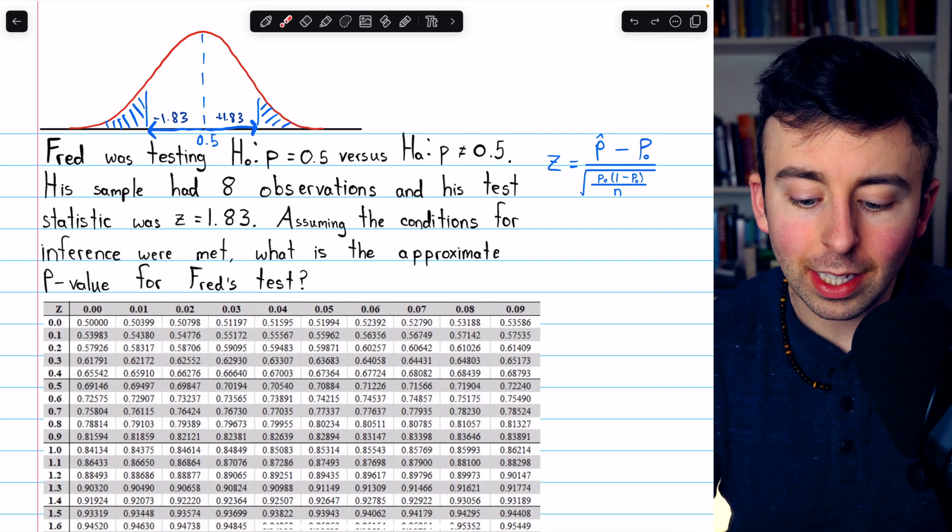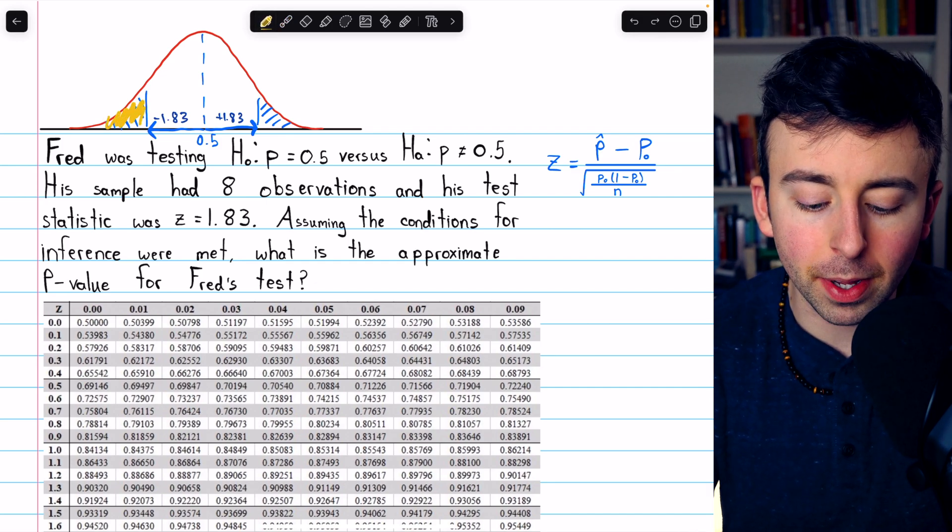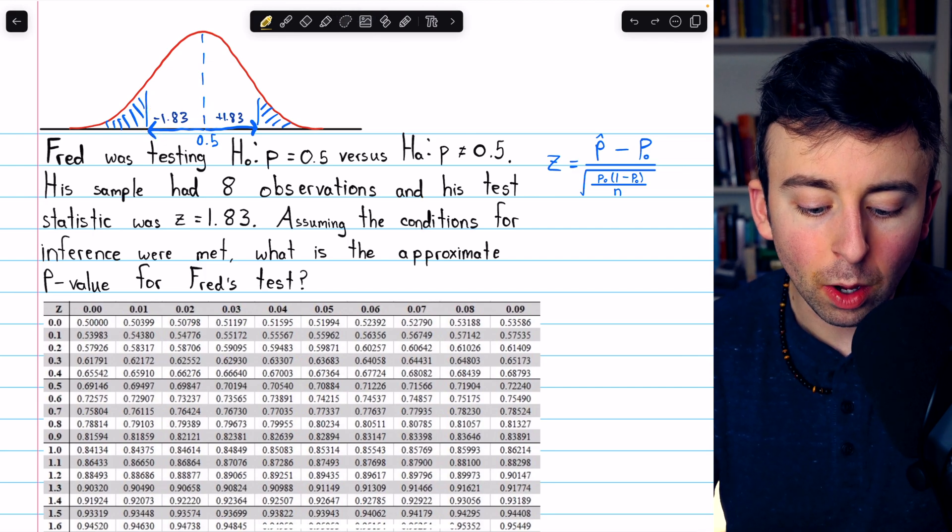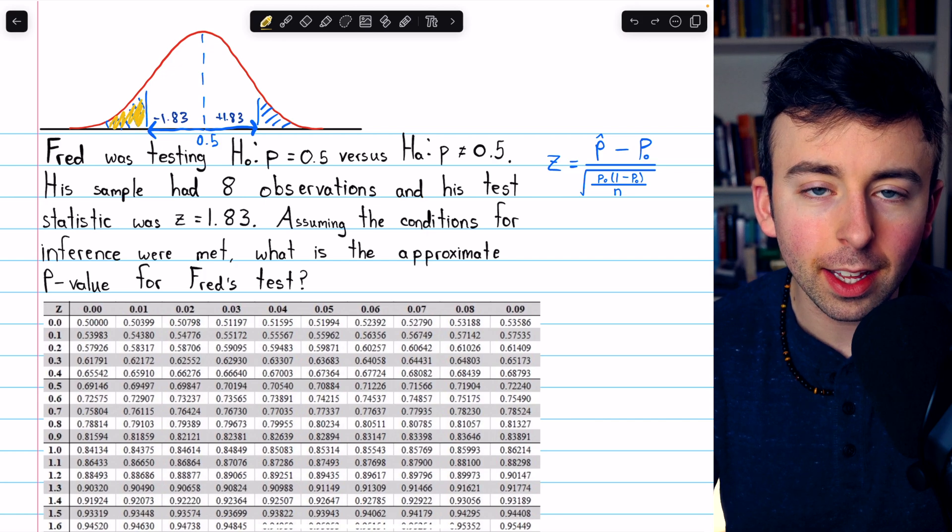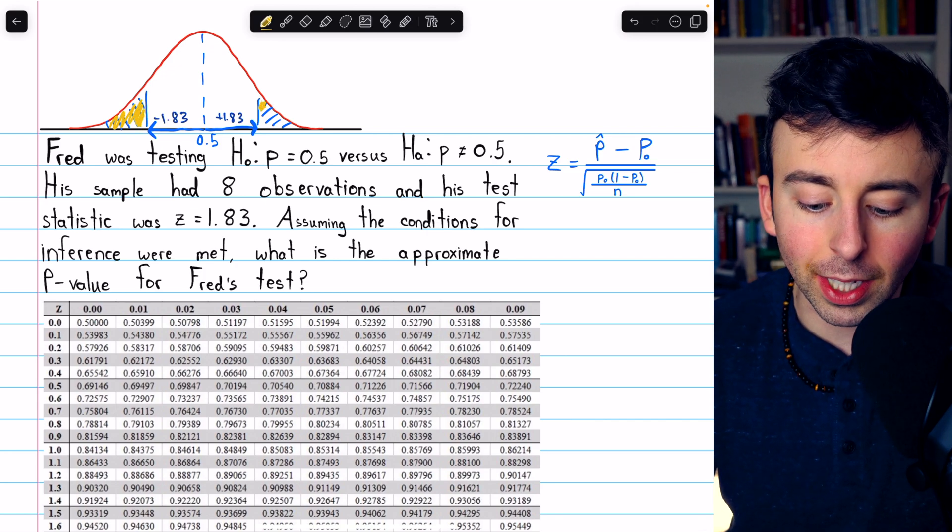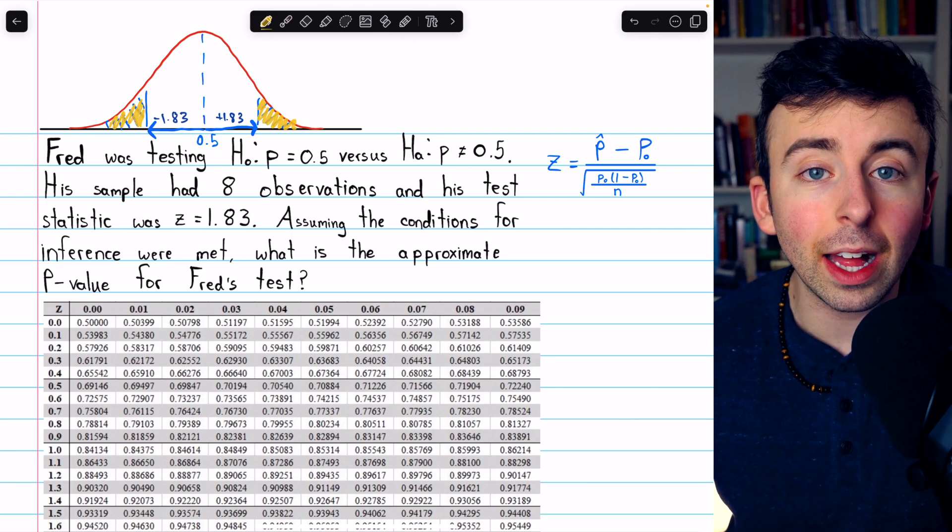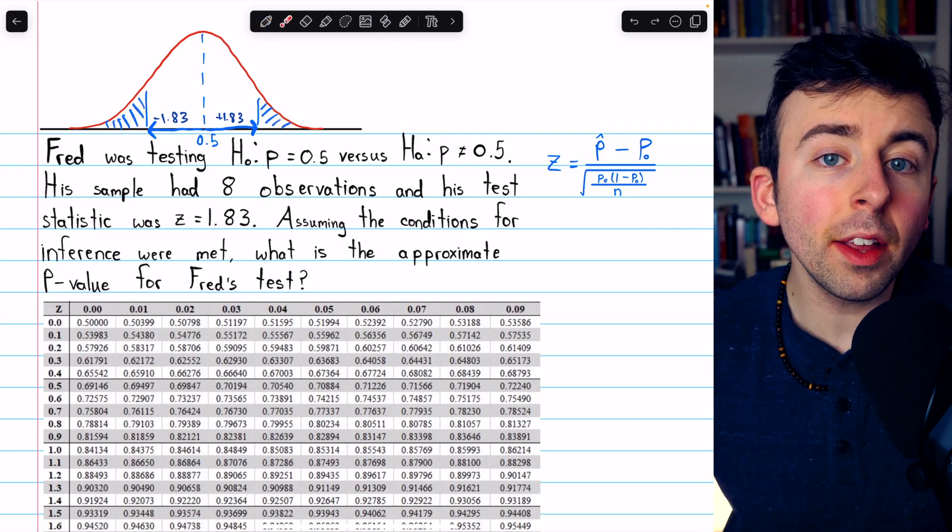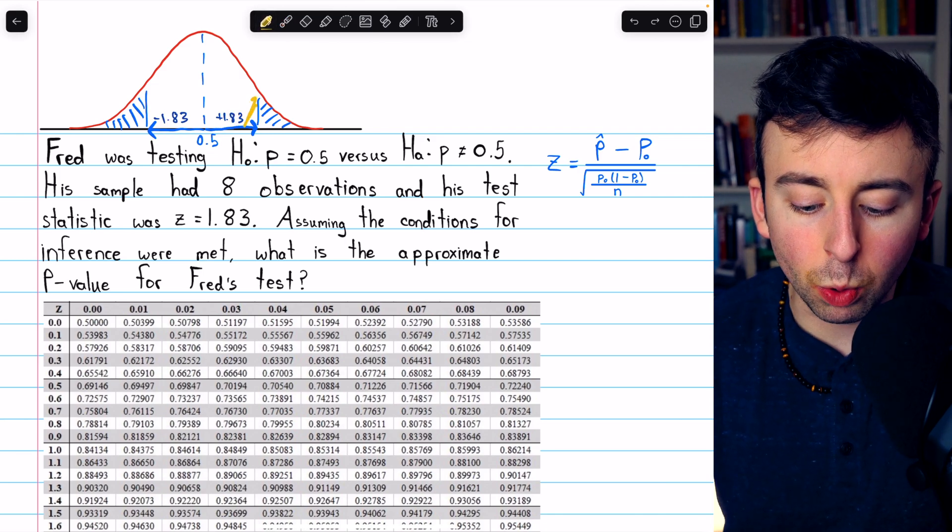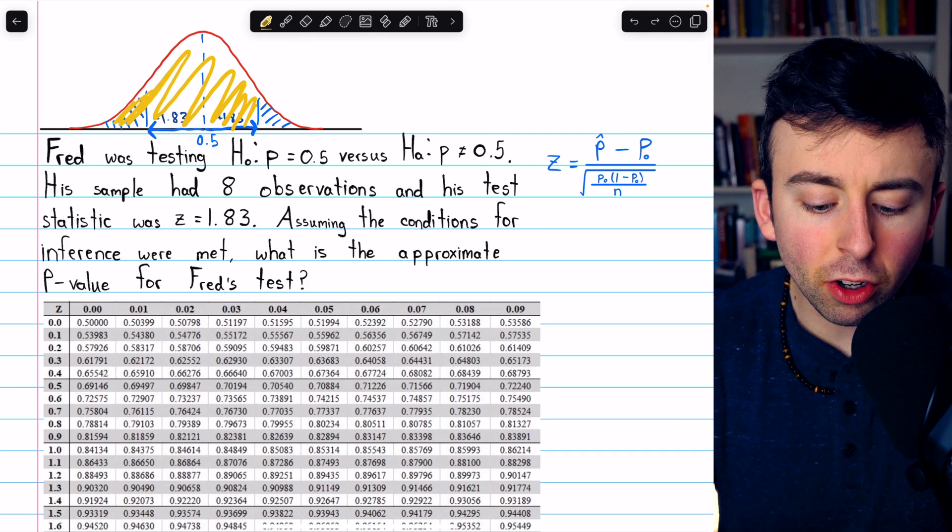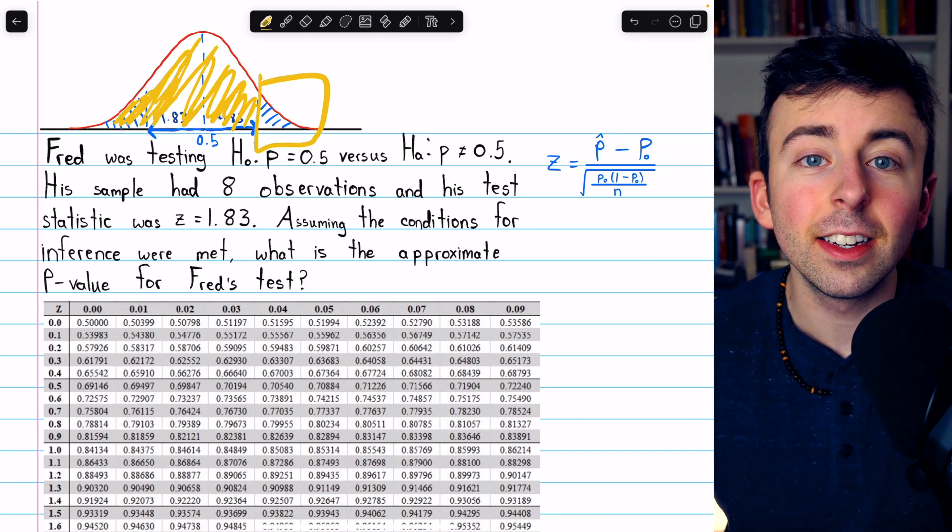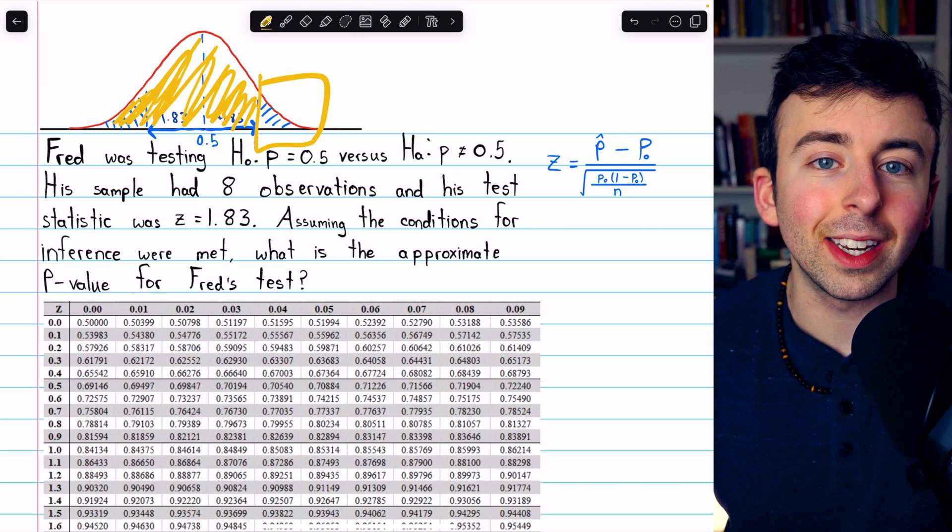Well, the z-score table gives us left tail probabilities, so if we just look up negative 1.83 in the table, we will get this area, and then because the normal distribution is symmetric, we can just double it to get this area as well. And if you only have a positive z-score table, then you can look up positive 1.83, which will give you this area, and just take the complement of that to get the tail, and then again, double the tail. We'll actually do it that way.